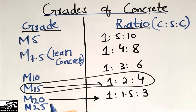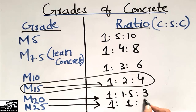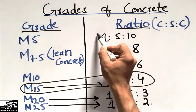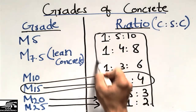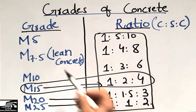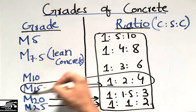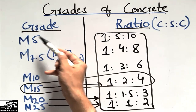M25 has a ratio of 1:1:2. These are some of the grades of concrete with their respective ratios. By using these ratios, we can achieve the corresponding target strength in megapascals or Newtons per millimeter squared, which are the same unit.